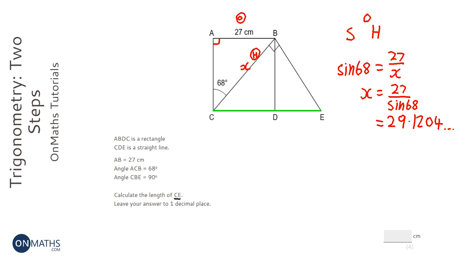So the next thing I need to do is work out CE. Now I'll need this angle here, which actually I can just take away 68 from 90 because it's a rectangle.